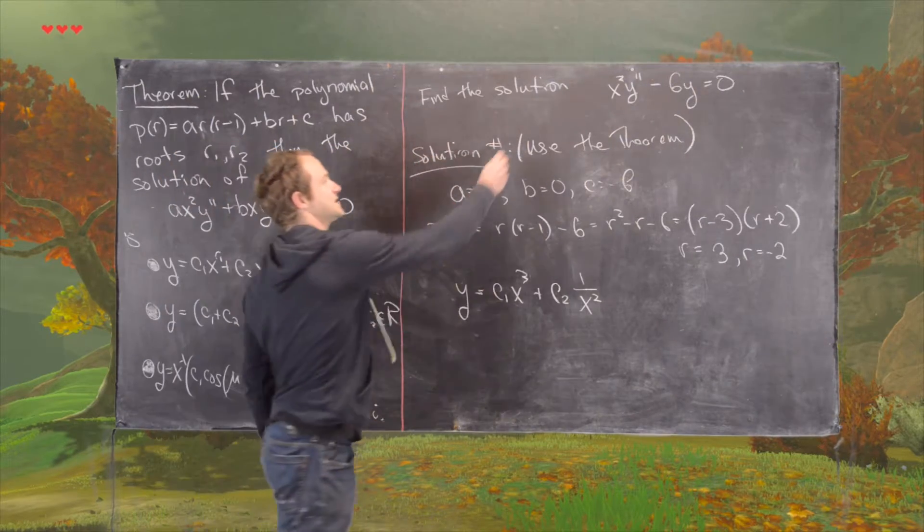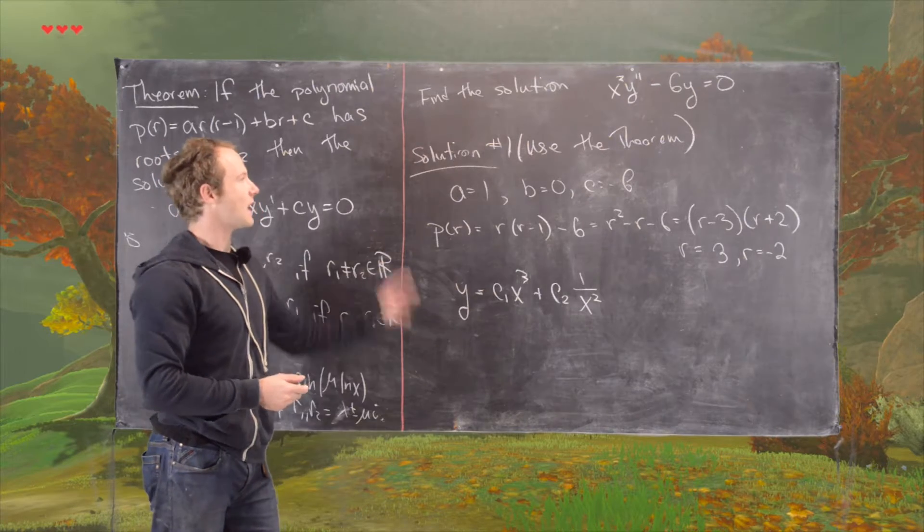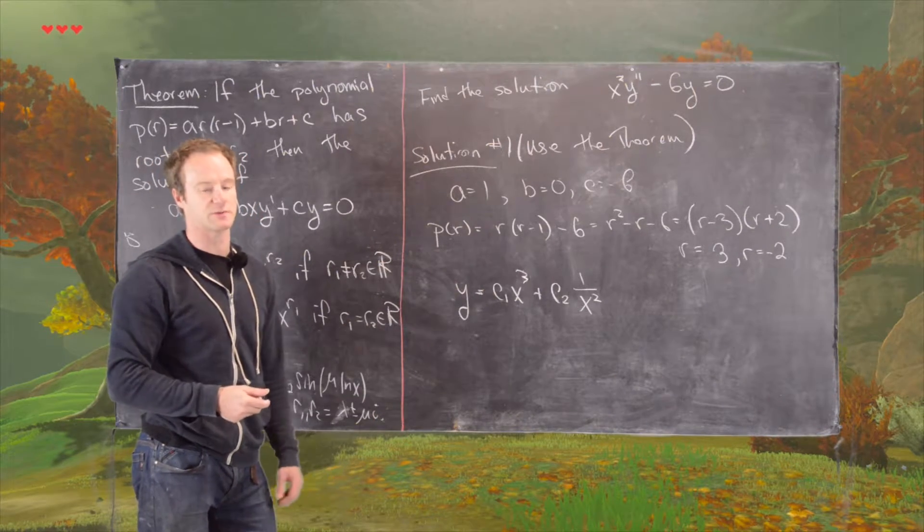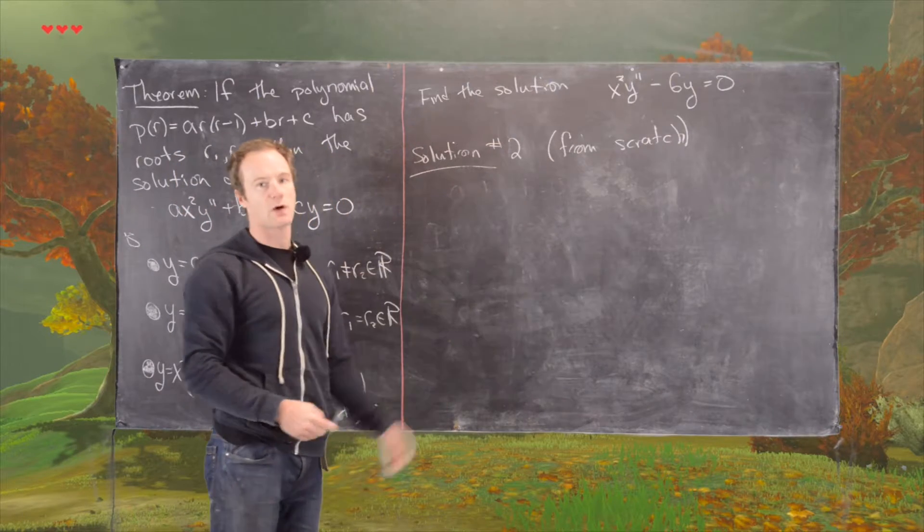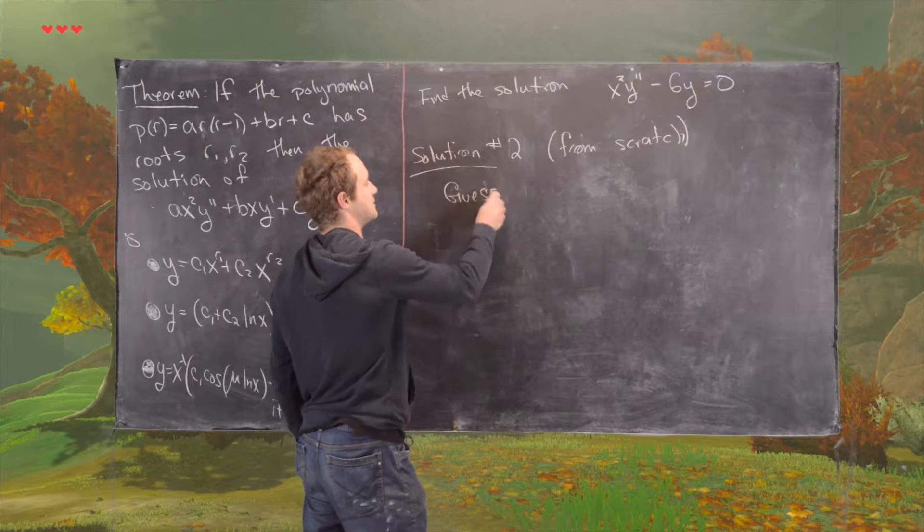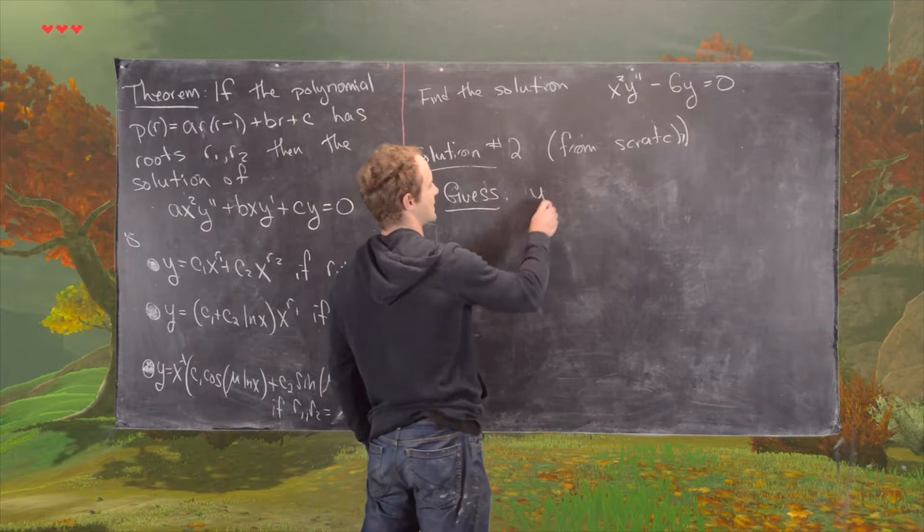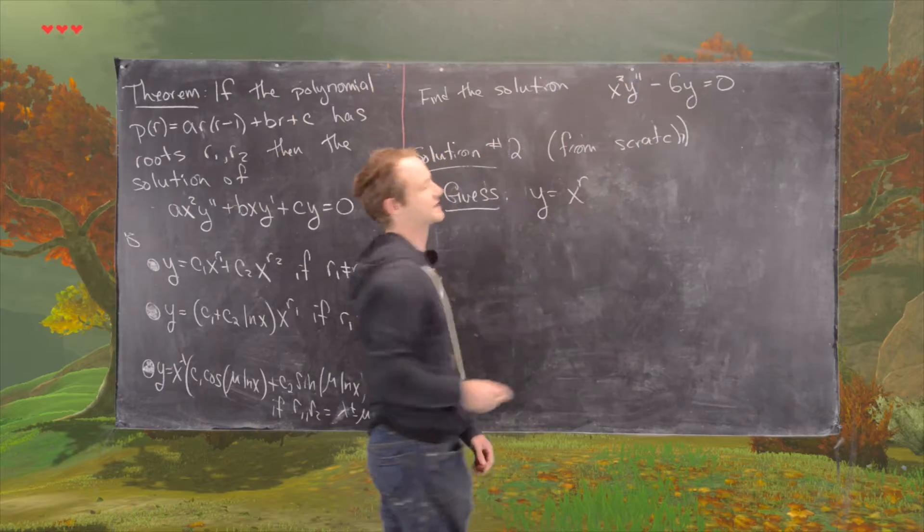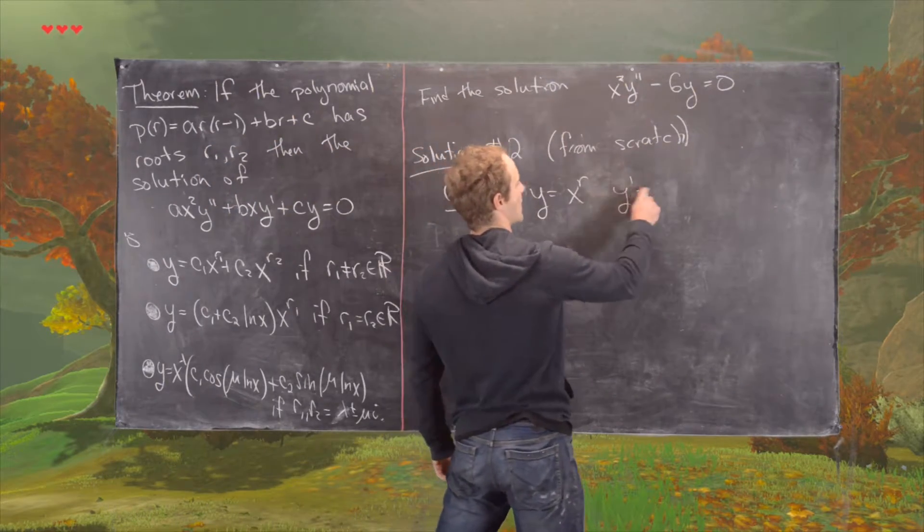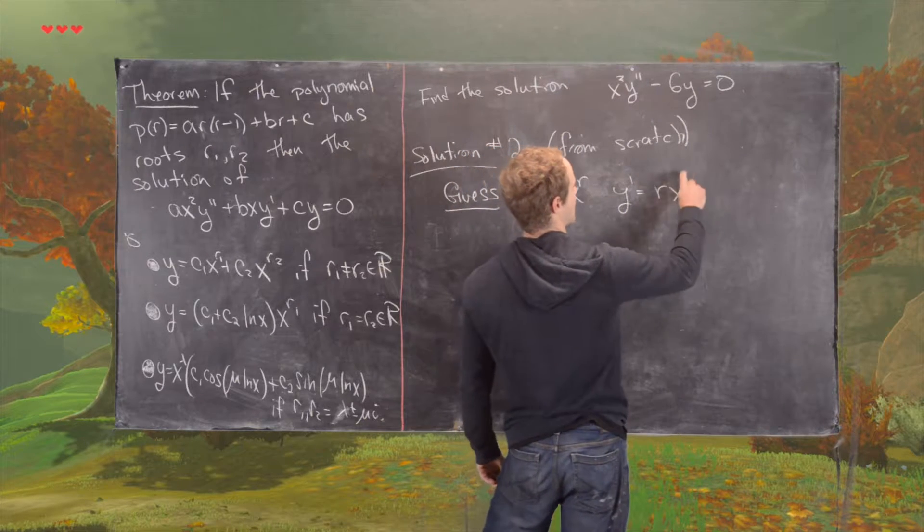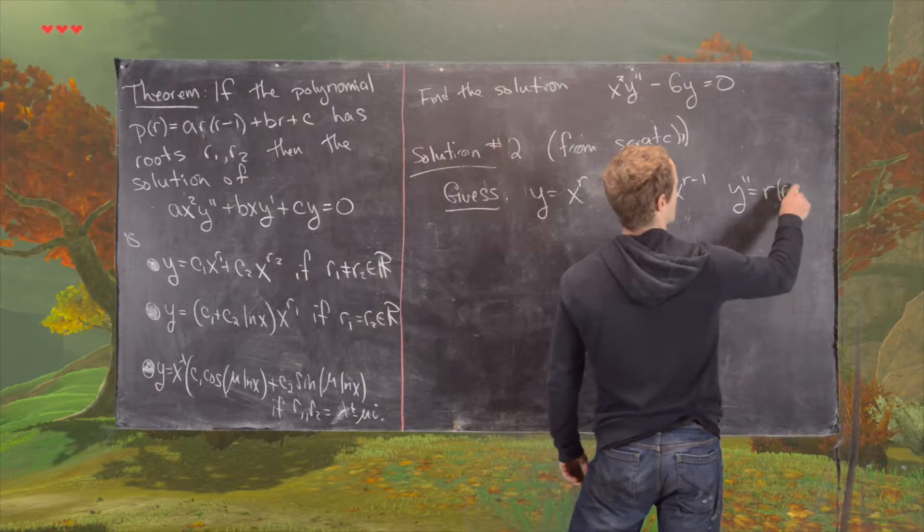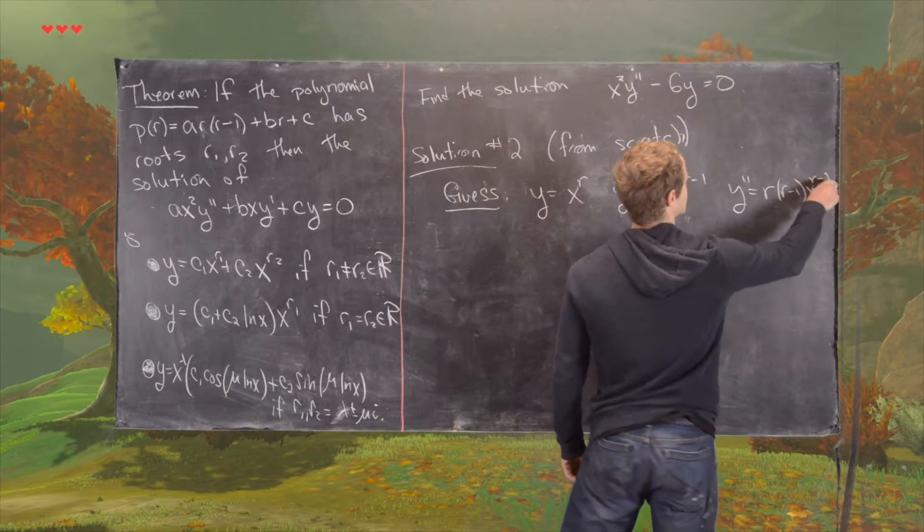So this is solution one using the theorem. I'll clean up the board, and then we'll do solution number two, which is building the solution from scratch. So now we're ready to do solution number two. Here we would guess that the solution is of the form y equals x to the r. And that tells us that y prime equals r times x to the r minus 1, and y double prime equals r times r minus 1, x to the r minus 2.